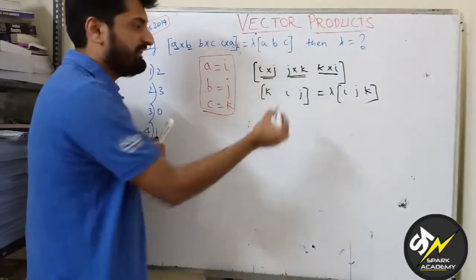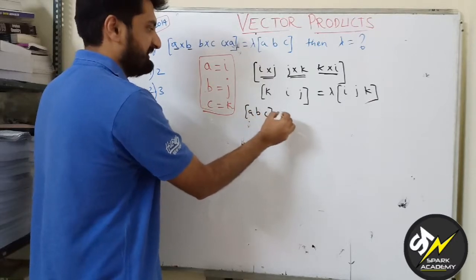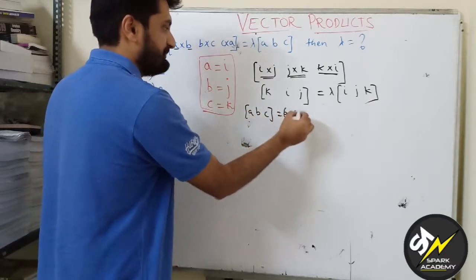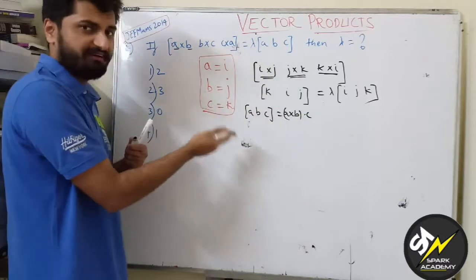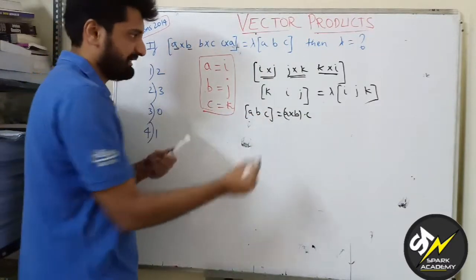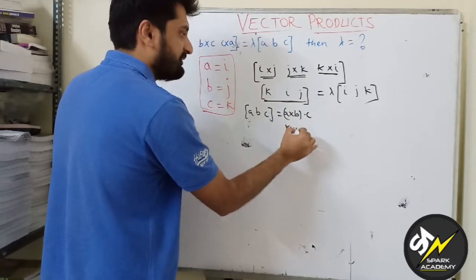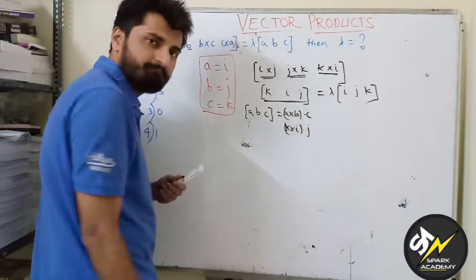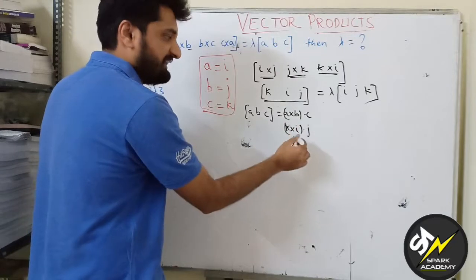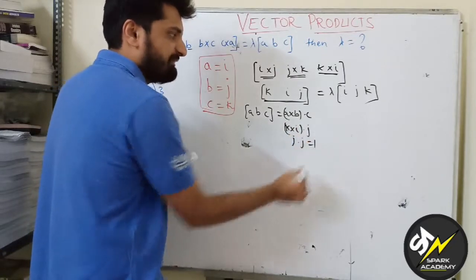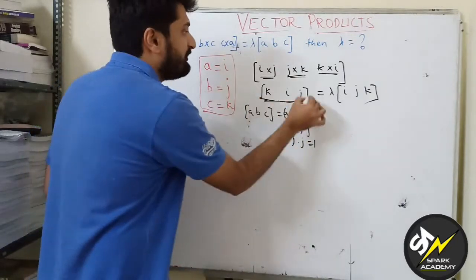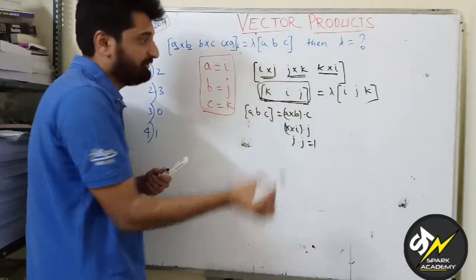Now we know that box(a,b,c) can be written as (a×b)·c or a·(b×c). So now LHS I can write as (k×i)·j. We know that k×i is j, so j·j will be 1. So this box(k,i,j) is a standard value which is 1.